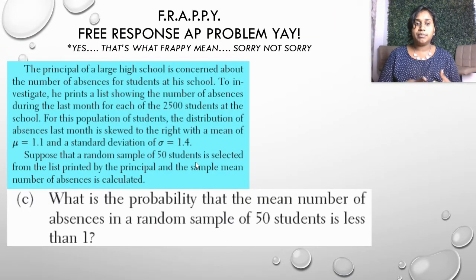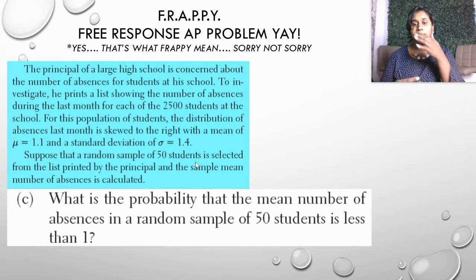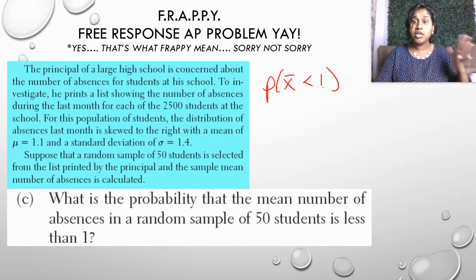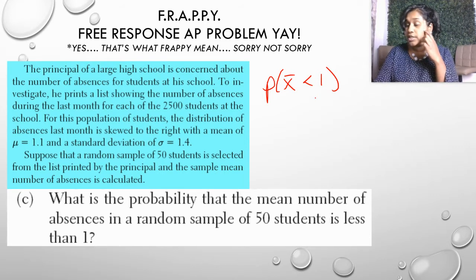Question C. What is the probability that the mean number of absences in a random sample of 50 students is less than one? So we're dealing with probabilities of sampling distributions. So what I want to look for here is that my sampling distribution is less than one.